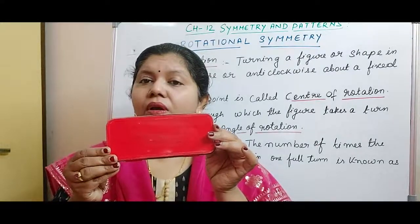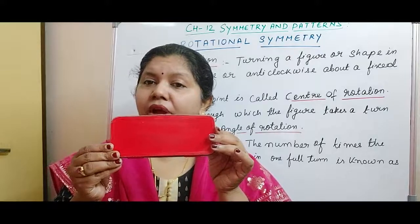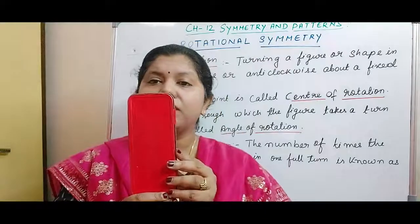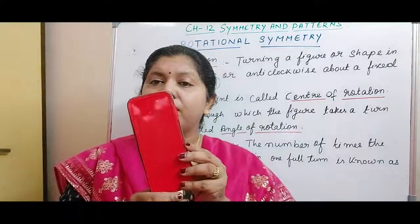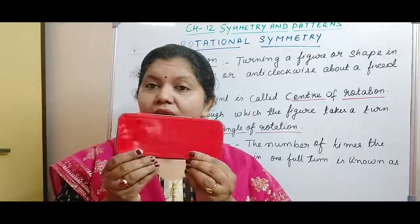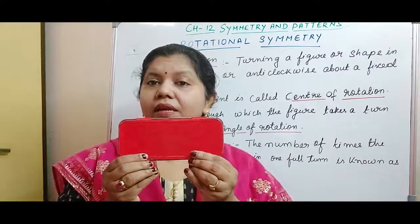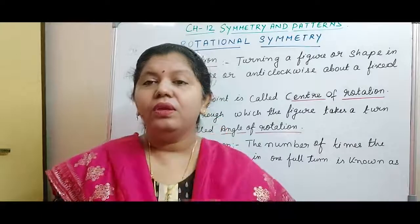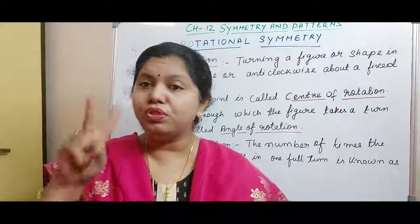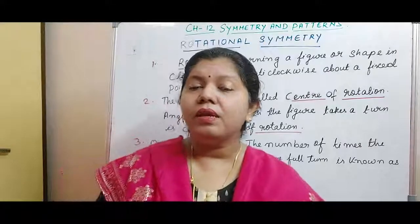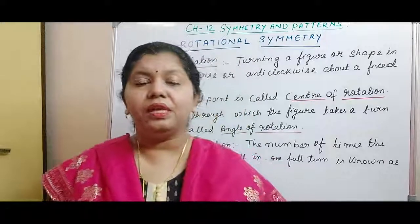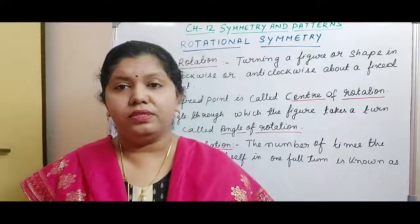This has completed 180 degrees. Another 90 degrees — you see it is not in its original form. Now another 90 degrees means a full turn, and it is coming to its original form. So we can say the order of rotation of this particular shape is twice, because it is coming to its original form two times in the full turn of 360 degrees.